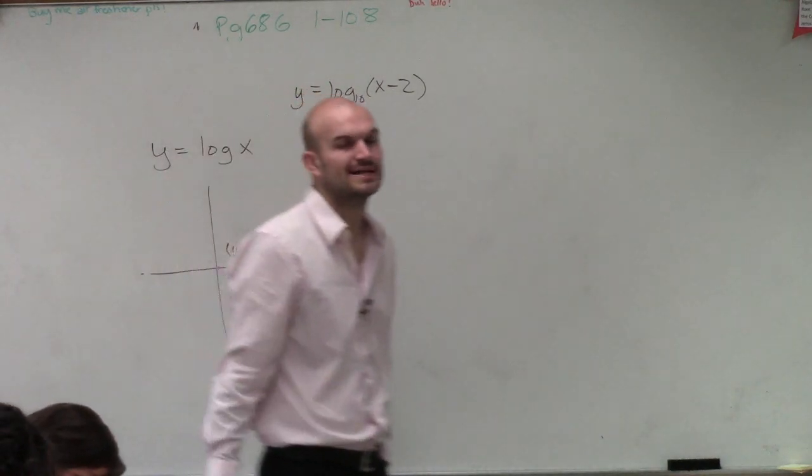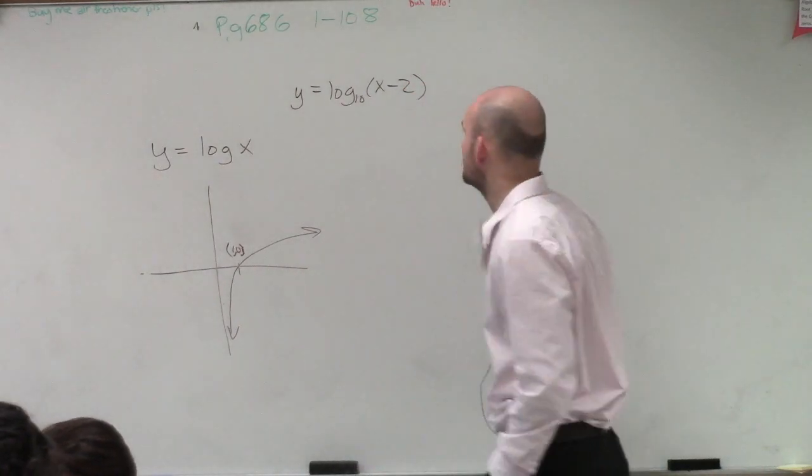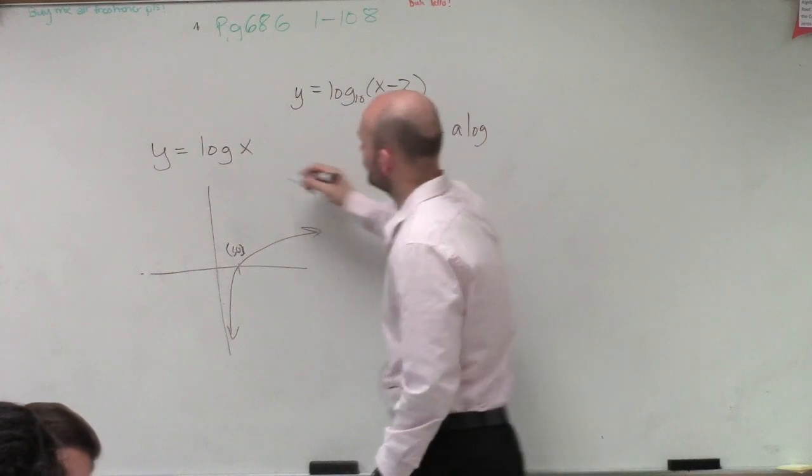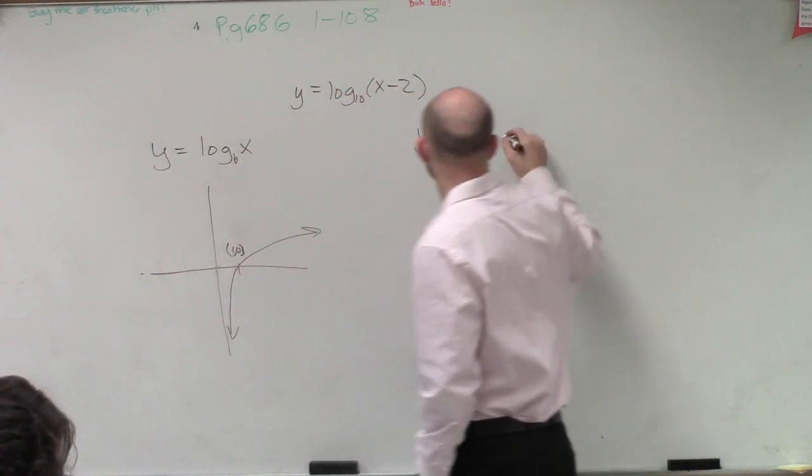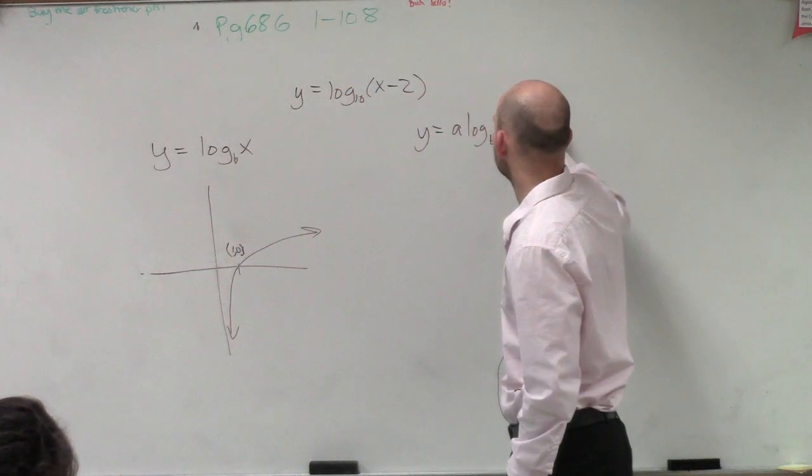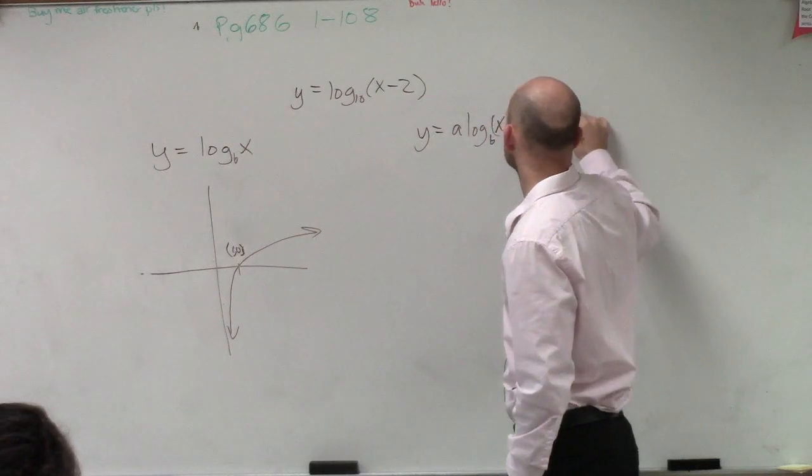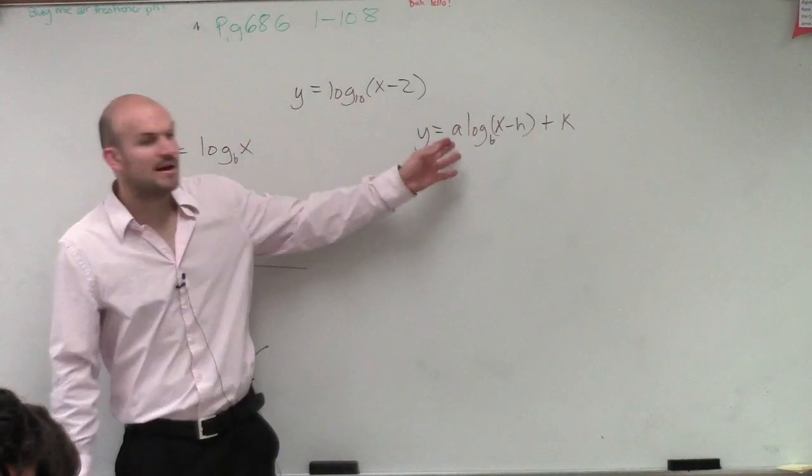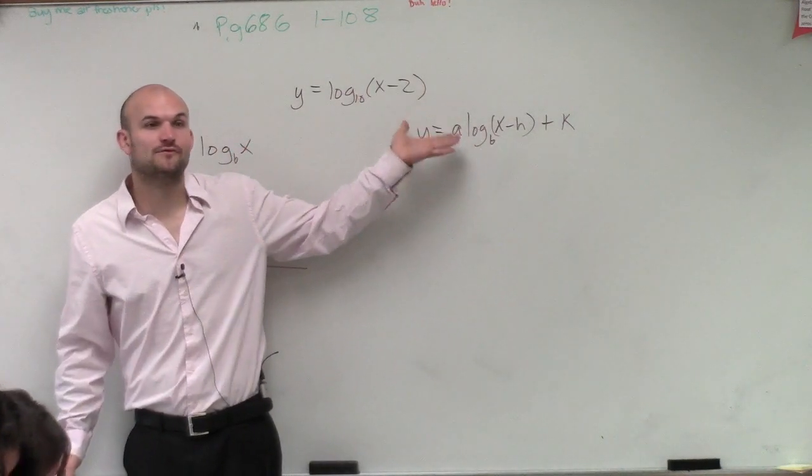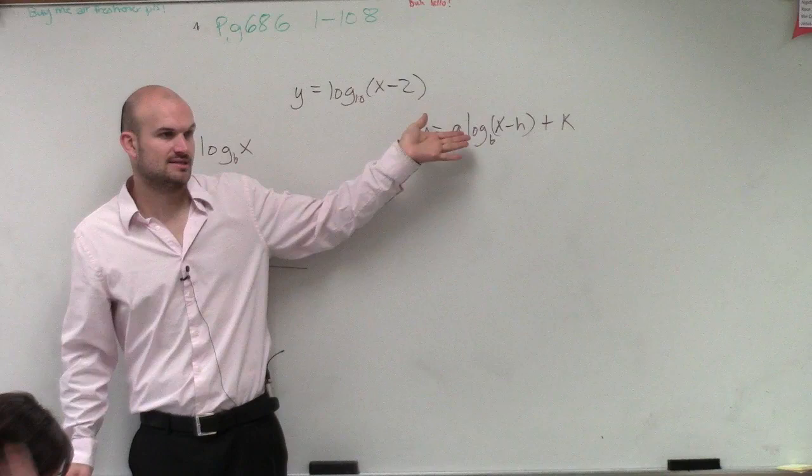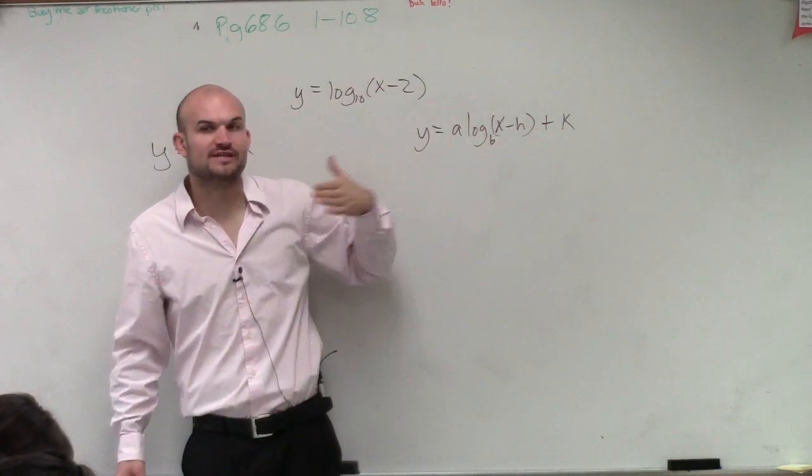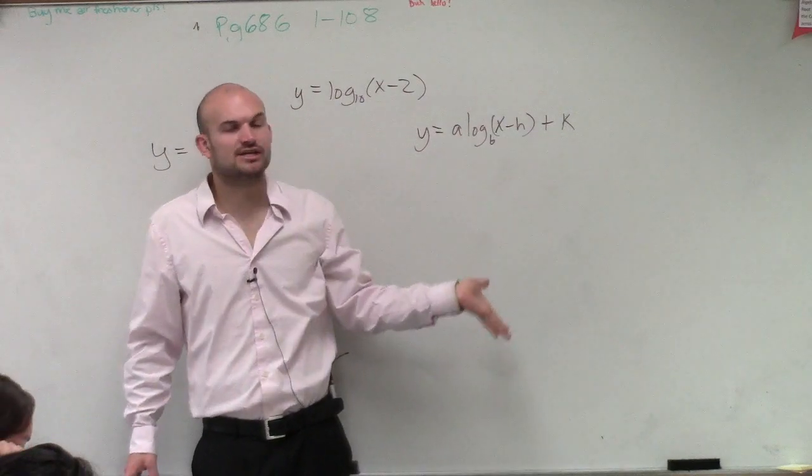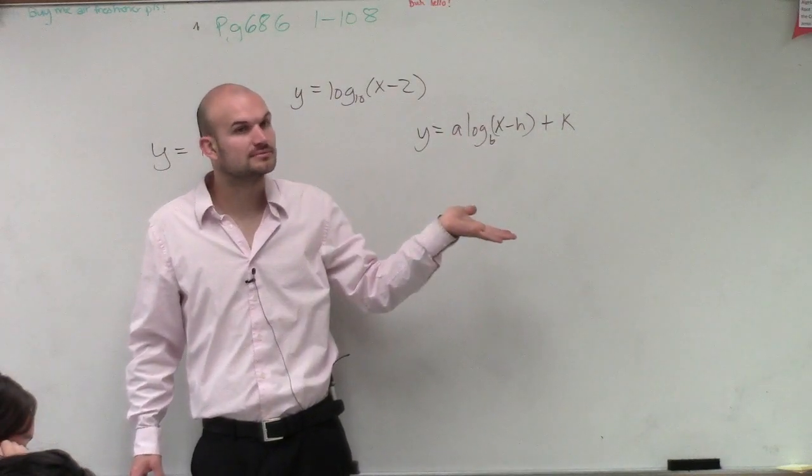Now, the next thing we kind of talked about was our transformations. So we have y equals a times log, and really, it doesn't matter your base b, base b of x minus h plus k. So if we go back and review our transformations, remember a told us if our graph was reflected over the x-axis. h told us if our graph is shifted left or right. And k, remember, tells us if our graph is going to shift up or down.